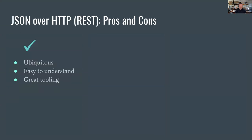We're seeing a lot of JSON over HTTP, called REST. The pros: first, it's ubiquitous. If you sample a random API on the internet, it's very likely to be JSON over HTTP. It's easy to understand because it's very common. Virtually every language would have a great HTTP client library and great JSON support with great tooling. There are many ways to make JSON requests, it's easy to inspect in the browser, and overall it's easy to get started and stay there.